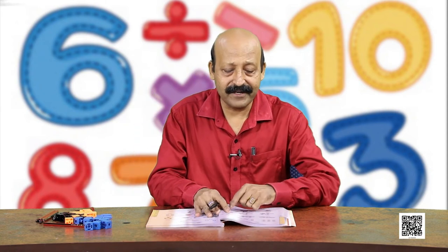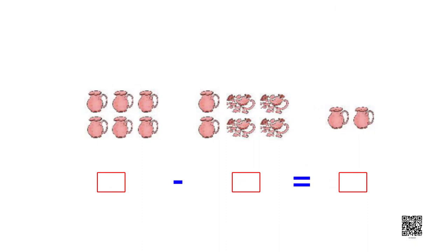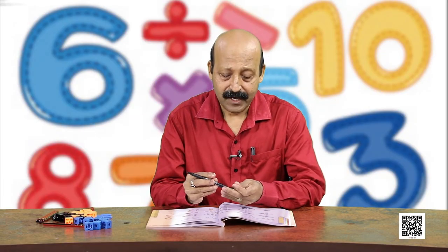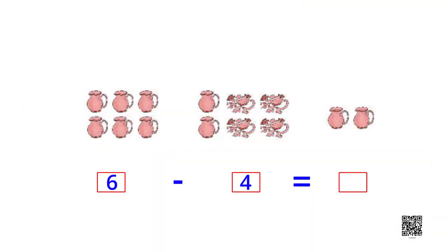Let us do some more activities. There are 1, 2, 3, 4, 5, 6 - these are 6 pots and 4 have broken away. So how many are left? Now see there is a change: in place of 'take away' we write a symbol - a sign which we call the subtraction sign. And 'how many are left' we write with the equal to sign. So we read it as: 6 minus 4 equal to 2. This sign is called the minus sign.